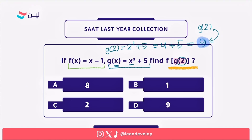Now we substitute g(2) = 9 into f(x). Since f(x) = x minus 1, we replace x with 9: f(9) = 9 minus 1 = 8. So the answer is A.